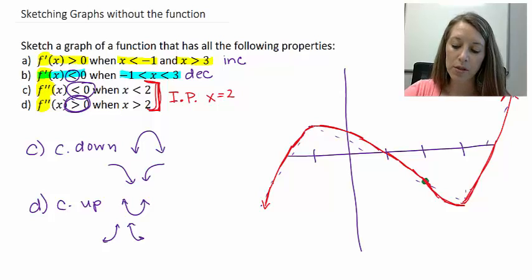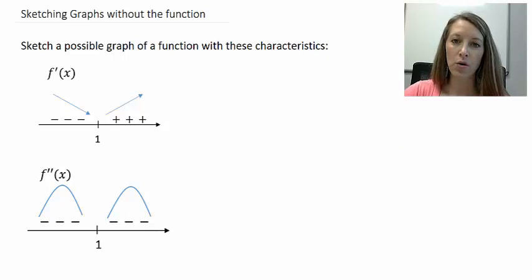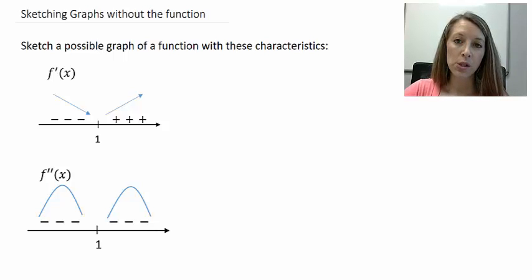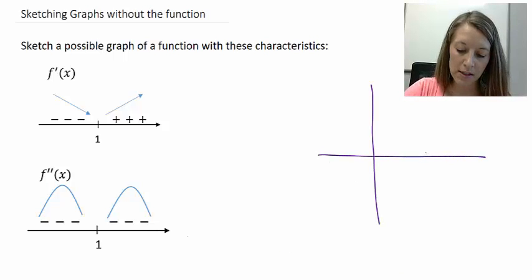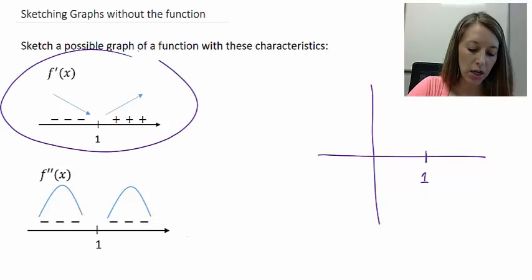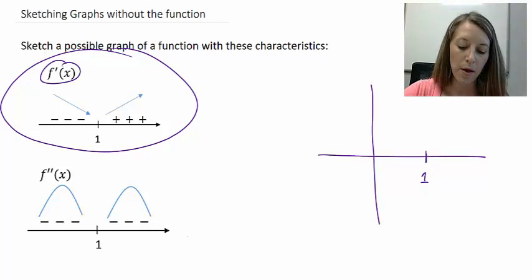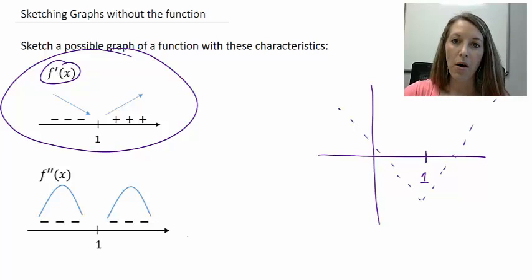For the third example, instead of giving greater-than and less-than information, they give us sign charts — which might actually be a little easier since you can see the shapes. Everything important happens at x = 1. The first sign chart describes the first derivative, so it's talking about slope — the graph is decreasing up until one, then increasing past one. At first glance you might think this is just a parabola, which seems reasonable. But then we have to look at the second derivative.